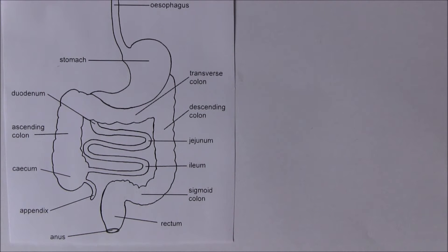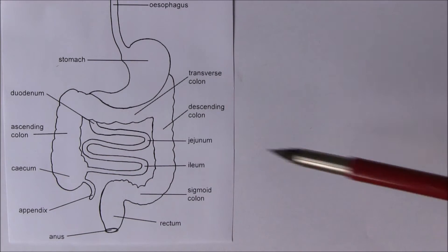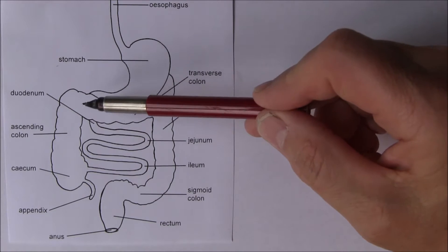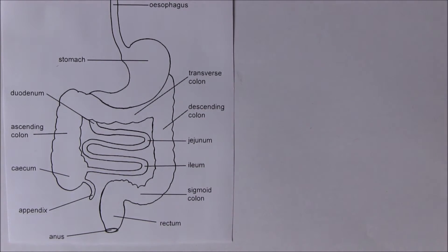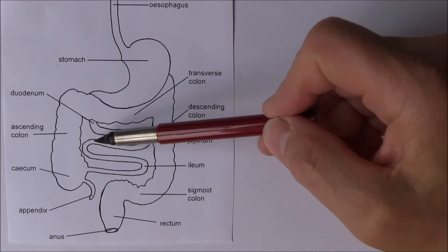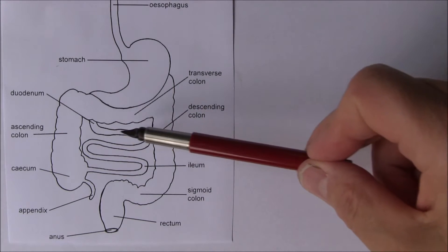The duodenum is proximal, the jejunum is the middle part, and the ileum is the distal part of the small intestine. It's called 'small' because its lumen is more narrow than in the large intestine. The length of the small intestine varies considerably between individuals — studies have shown it's between 3 and 8.5 meters, with the average being around 5 meters in length.